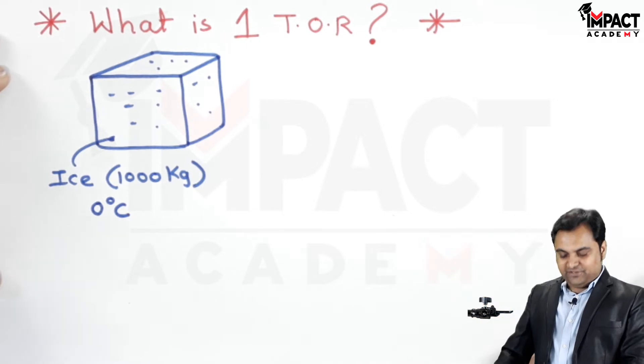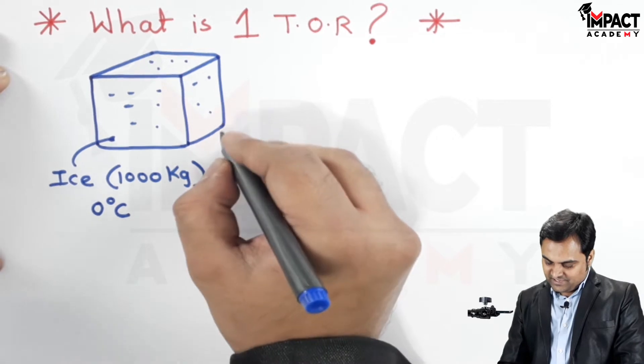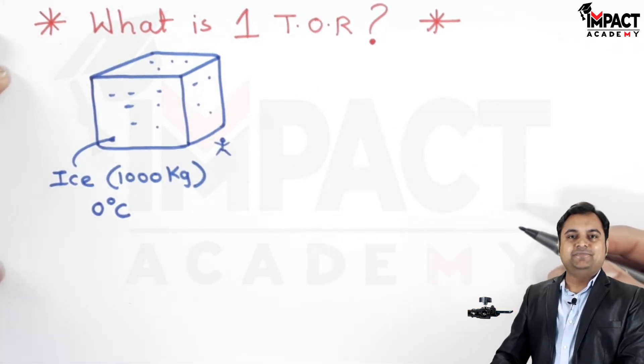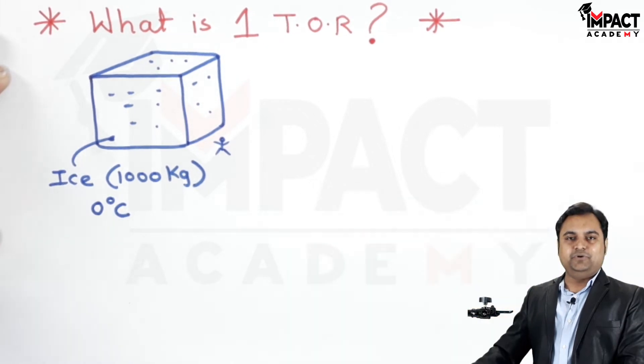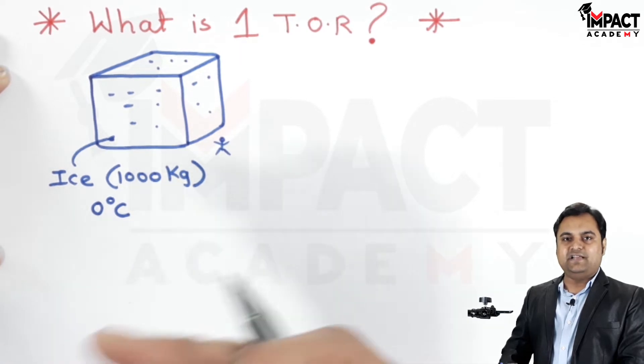Now for explaining the one ton of refrigeration effect, we can imagine that we are standing near this ice cube for 24 hours and during that 24 hours time there would be this uniform melting of ice and it would get converted into water.